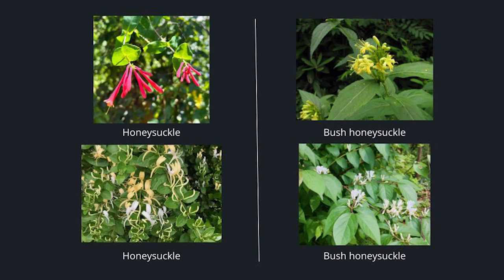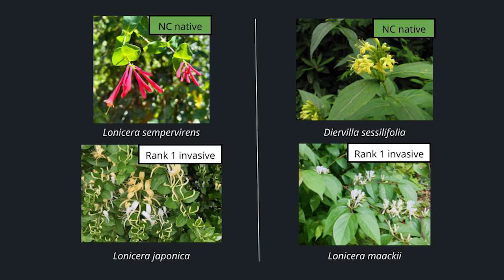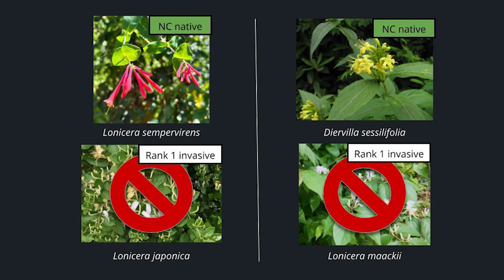Here we have examples of honeysuckle. Going by just the common name, you can see that there are multiple varieties of honeysuckle and multiple varieties of bush honeysuckle. However, two of these are rank one invasives, and two are North Carolina natives. When we go by the botanical names, we can easily distinguish the difference. The rank one invasives are the plants we want to avoid planting in our yard and also remove if we have them on our properties.